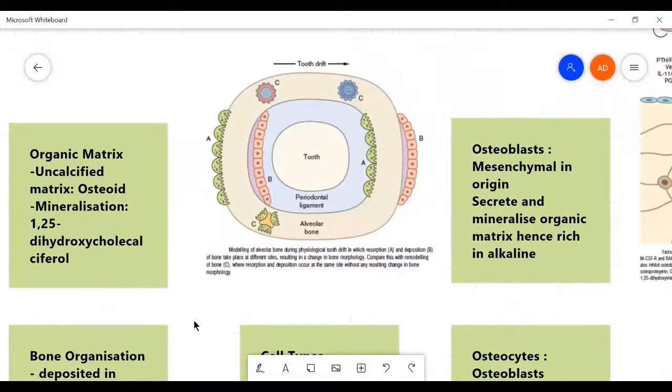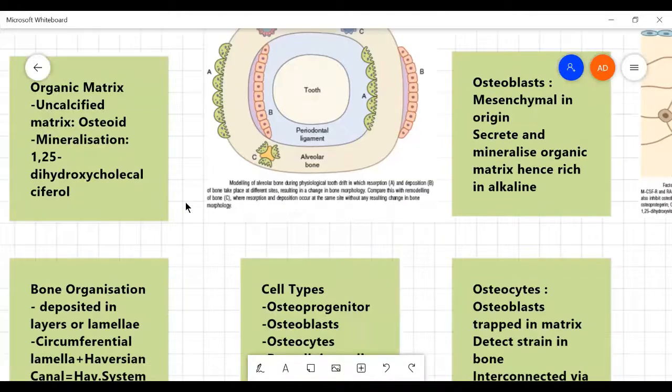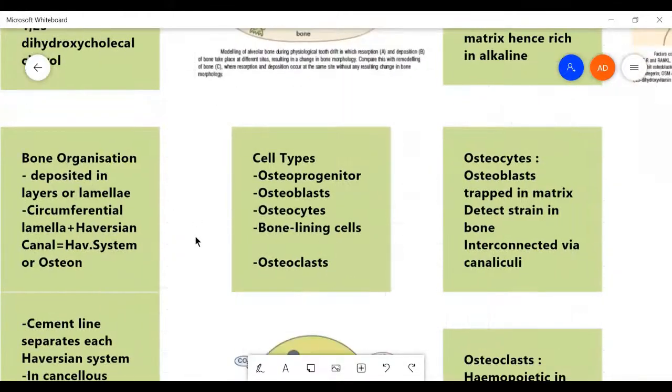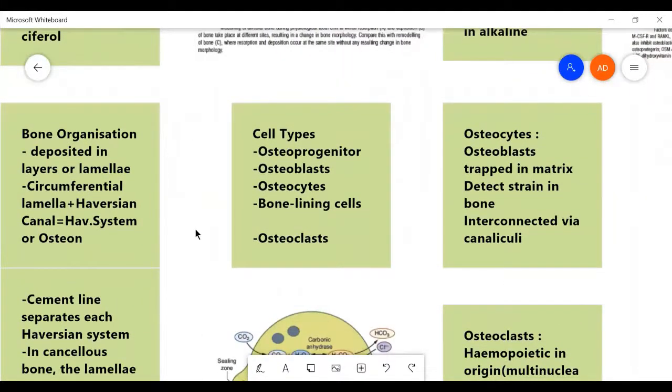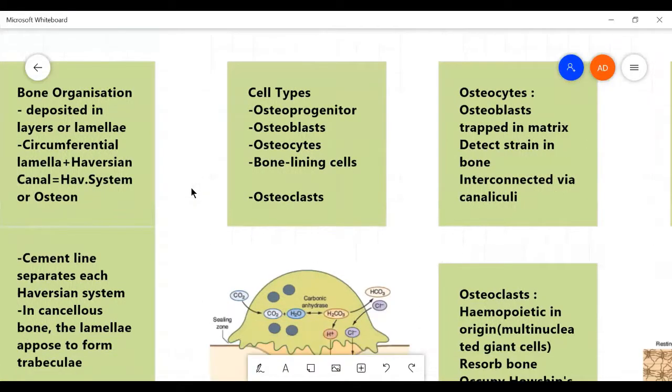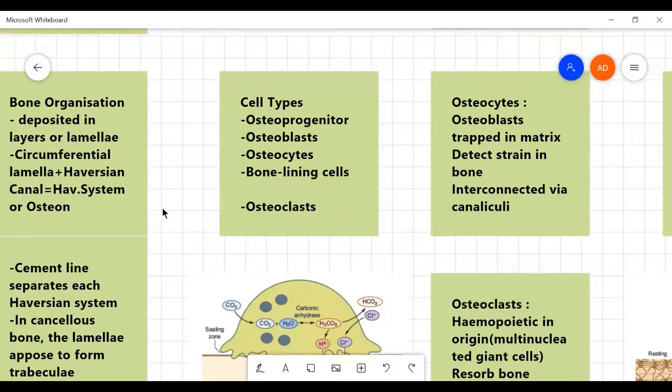And this remodeling of bone, the resorption and remineralization of bone causes tooth drift. In the diagram, you can see these green Pac-Man monsters are the osteoclasts, the type of cell that resorbs the bone. And the pink cute ones are the osteoblasts that form the bone. Now, you must be asking me, what the hell is an osteocyte? What the hell is an osteoblast? What the hell is an osteoclast?